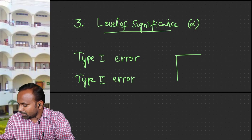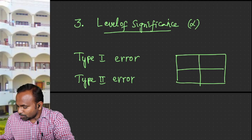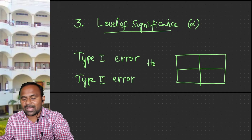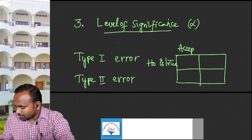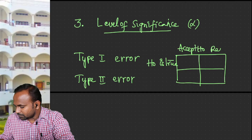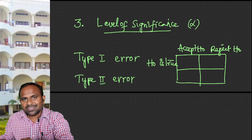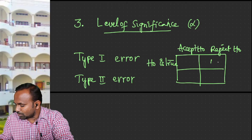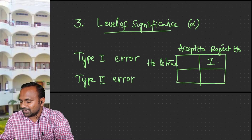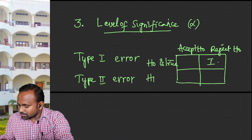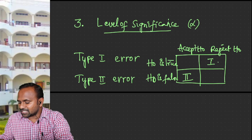In the decision making process, a few things may arise. The statement H0 about the parameter may be true, but you may decide to reject it — this case is called Type 1 error. So Type 1 error is rejecting H0 though it is true. Or if H0 is false but there are chances to accept it, that is called Type 2 error. Type 2 error is accepting H0 though it is false.